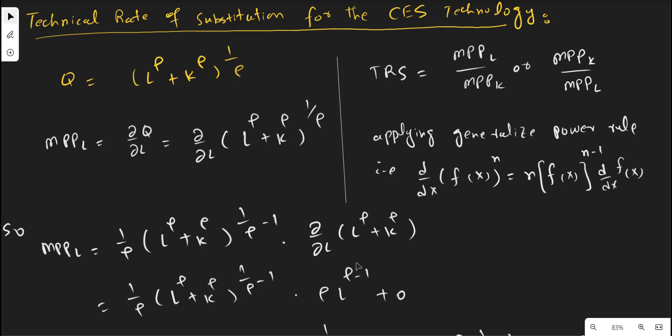The technical rate of substitution is the rate at which the two factor inputs are to be exchanged for each other. It is equal to the ratio of the marginal physical productivity of the two factor inputs — you divide the marginal physical productivity of one factor input by the other. Geometrically, it measures the degree of curvature of the isoquant.